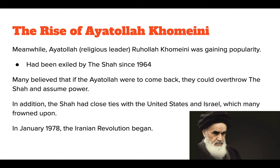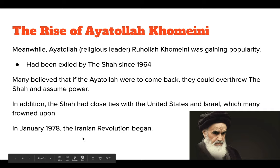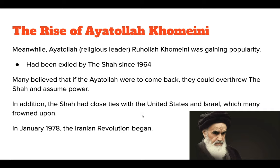Until this man — Ayatollah Ruhollah Khomeini, a religious leader who was gaining popularity. He had actually been exiled and was living in Saudi Arabia for a long time. Many believed that if he came back to Iran, he could overthrow the Shah and assume power. It's also worth noting that the Shah had close ties with the United States and Israel, especially in the 70s — which is when those tensions really began to rise. Because of Khomeini and these tensions, the Iranian Revolution began in January 1978.